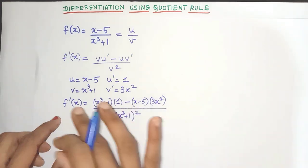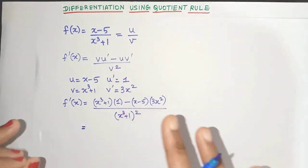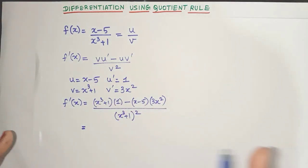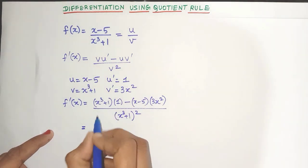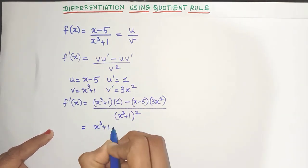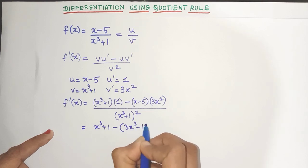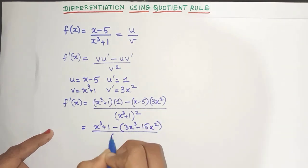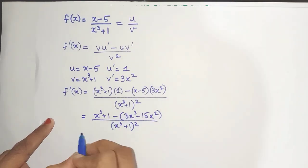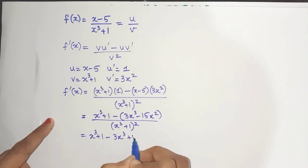Now in this step itself we have got the derivative. We have got the answer but we have to simplify it little bit further. So let's open up the brackets here. Yes I will get 3x cube minus 15x square divided by just keep the denominator as it is. Now I think further I can bring the minus inside. So let's do that.